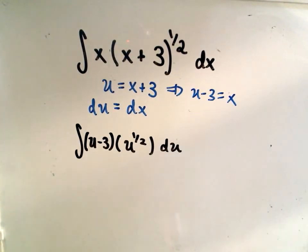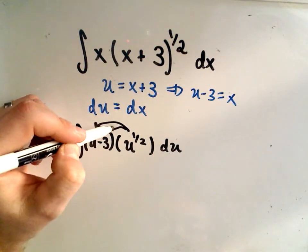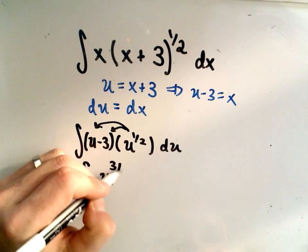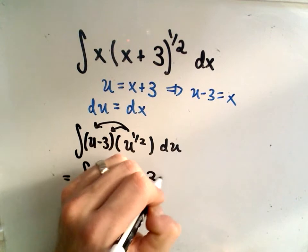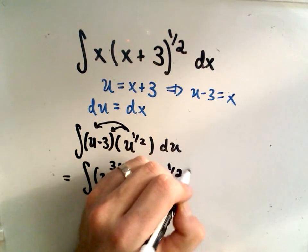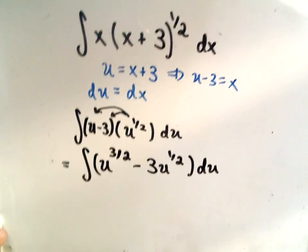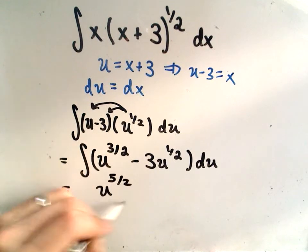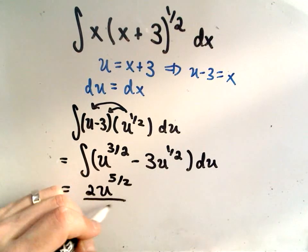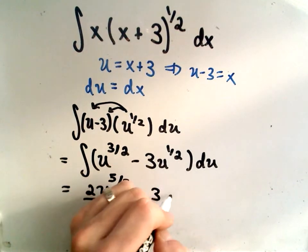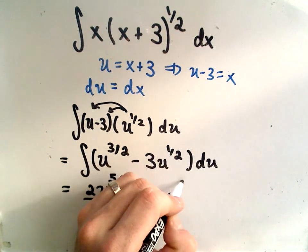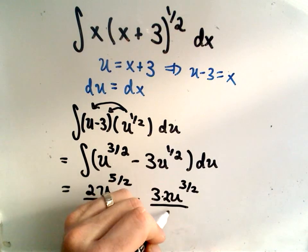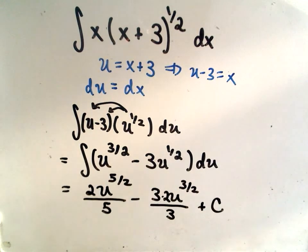Now this is just an algebra problem. I can distribute the u to the one-half out to both parts. We have to add exponents. We'll get u to the one-and-a-half, or u to the three-halves, minus 3u to the one-halves power. Now we just have to be careful when we calculate our antiderivative. When we add 2 over 2, we'll get 5 over 2. We have to divide by 5 over 2, but that's equivalent to multiplying by two-fifths. I would get u, if I add 2 over 2, we'll get 3 over 2. But now I have to multiply that. If I divide by three-halves, that's equivalent to multiplying by two-thirds. I have to stick on my plus C.